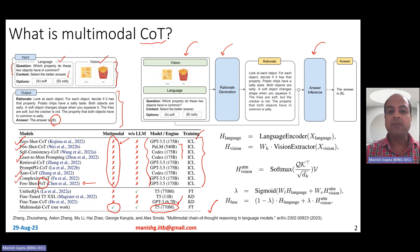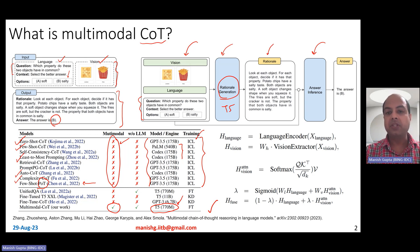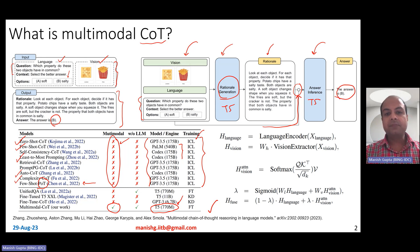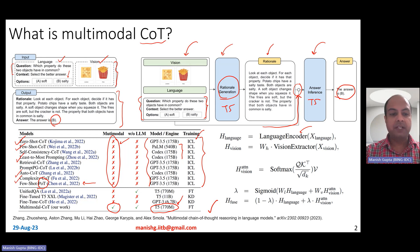The two stages are done using a simple small model like the T5 model. Essentially you take the vision input and the language input — which consists of question, context, and options — and feed it to a T5 model to generate a rationale. Once the rationale is generated, you append it to the original set of inputs and use another T5 model to generate the final answer. Specifically, in this work they use the UnifiedQA T5 model, which is basically a T5 architecture with some variations, as the language encoder.